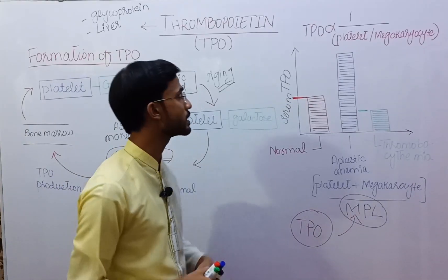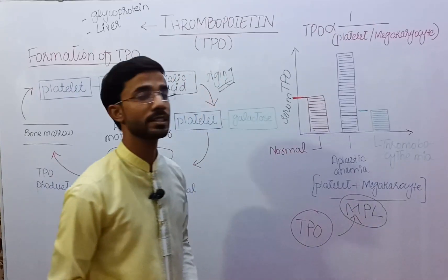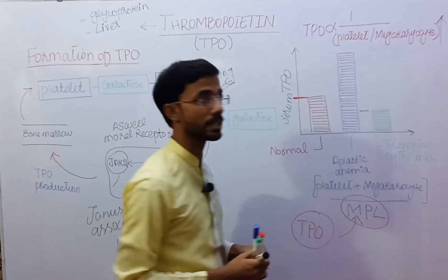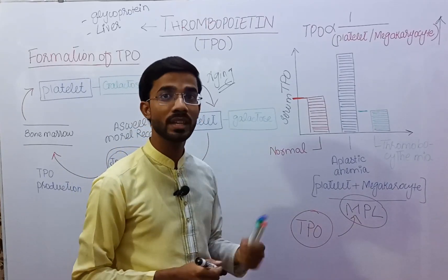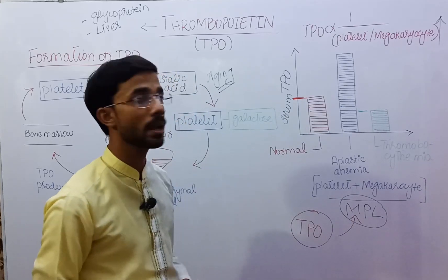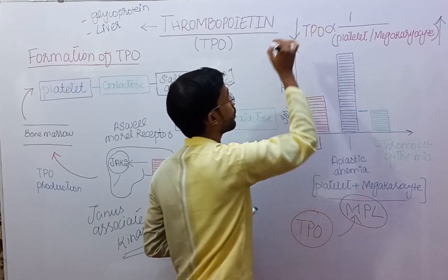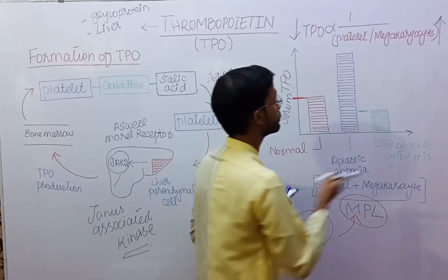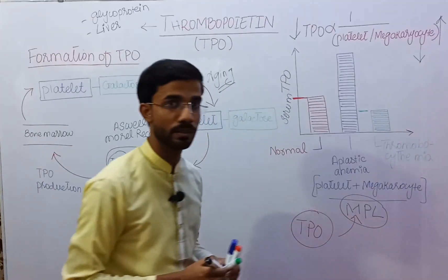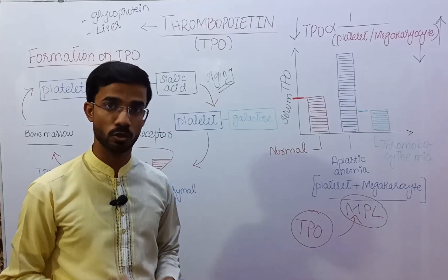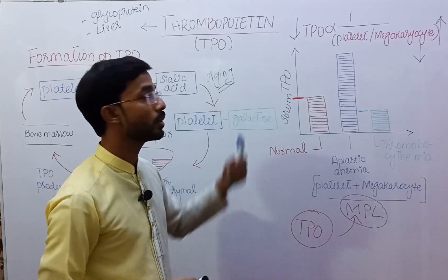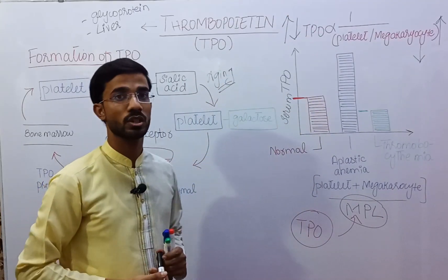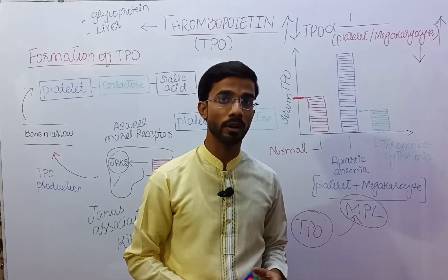An easy trick to remember this concept: TPO is inversely proportional to platelets or megakaryocytes. If the platelets or megakaryocytes concentration is high, it means MPL receptors are more and there are more chances of TPO attaching to the platelets, causing TPO concentration to be low. If the platelets or megakaryocytes concentration is low, MPL receptors will also be low, resulting in more TPO molecules present in the serum and an increase in TPO concentration. This is the basic concept of thrombopoietin, TPO.